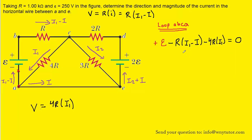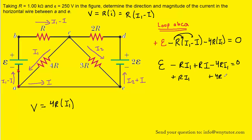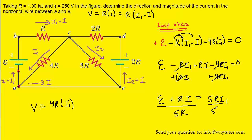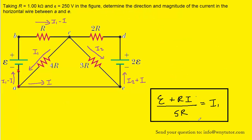Now we try to solve this equation for I1. We distribute the negative R, so that becomes E minus RI1. Distributing a negative to a negative gives plus R times I, and then we have minus 4RI1, all equal to zero. Adding RI1 and 4RI1 to both sides cancels them on the left side, leaving E plus RI. On the right-hand side we have 4RI1 plus 1RI1, which makes 5RI1. Dividing both sides by 5R cancels the 5R on the right. We hold on to this equation and use it shortly.